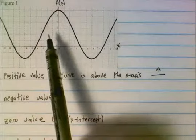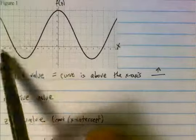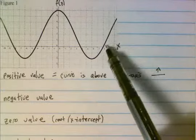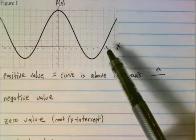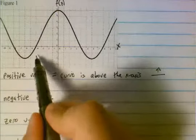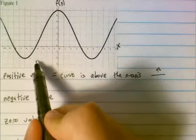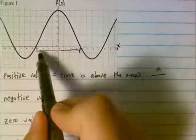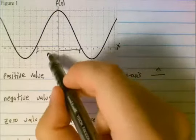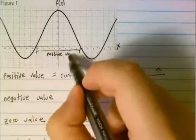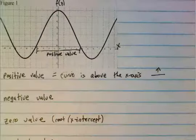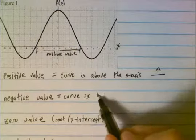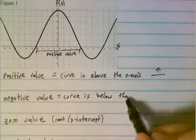If we look up on this graph right here we can see a couple of places where that happens — between negative 4 and 4, and when x is greater than 8. A negative value is just the reverse: the curve is below the x-axis.